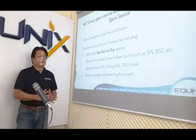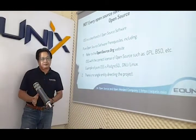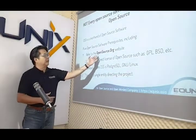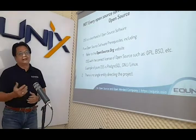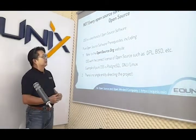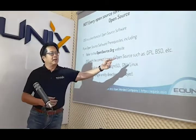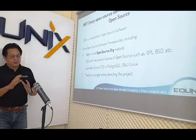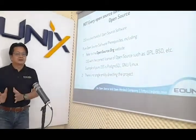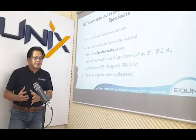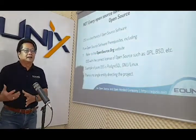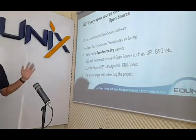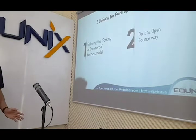We distinguish a pure open-source from a non-pure open-source. The pure one complies with the licensing model on the website opensource.org. You can see license models like GPL or BSD there. Others we don't talk about — the non-pure ones — since they have a company behind the project with some interest. So the open-source we are talking about right now is the pure one.